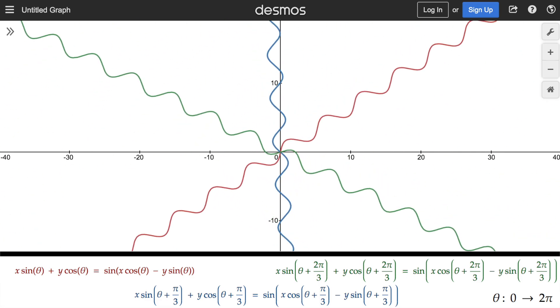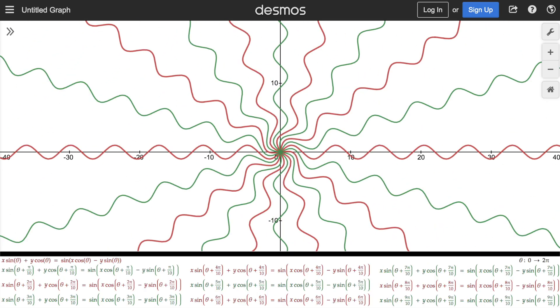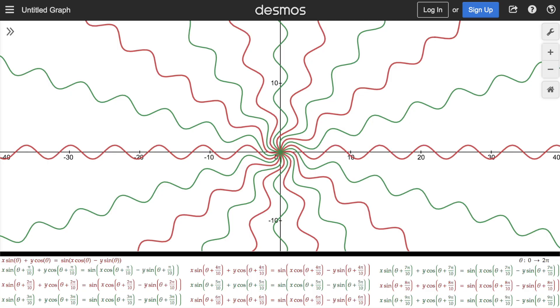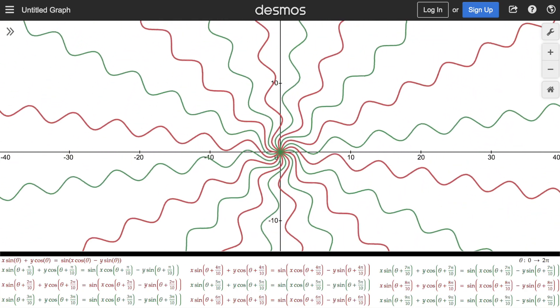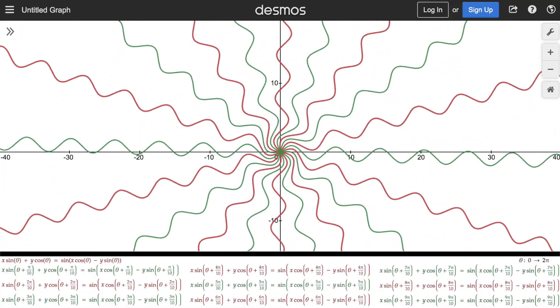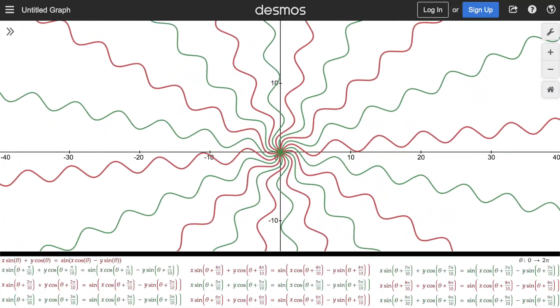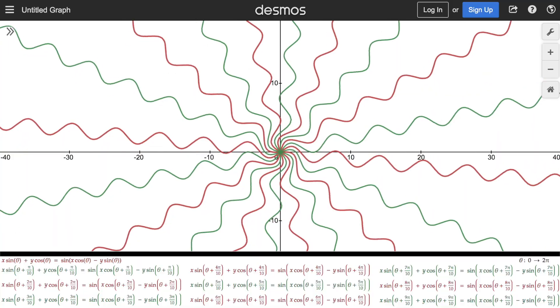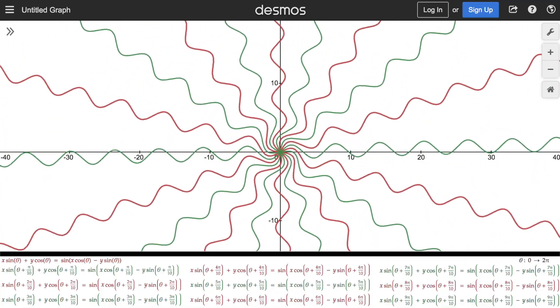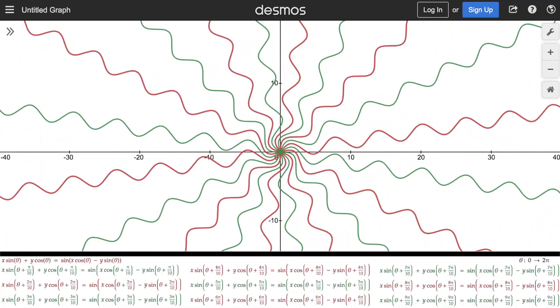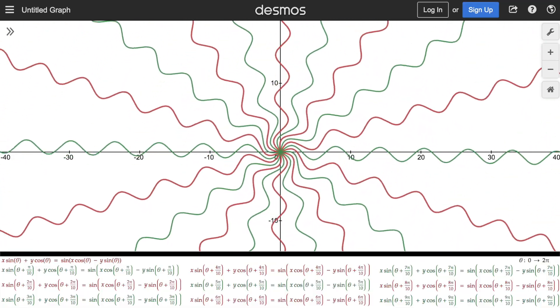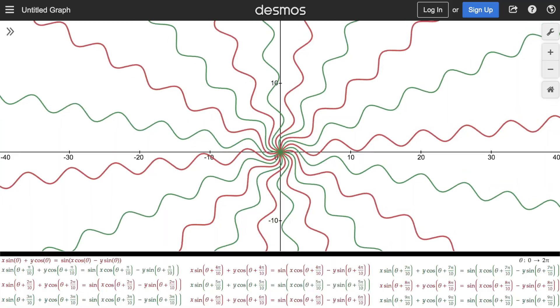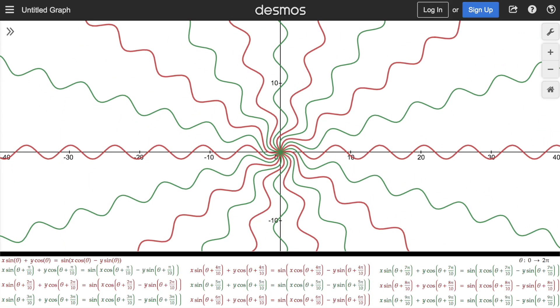But of course you can have any number of sines you want. Here you go. Ten sine waves. First one spins by theta. Second one spins by theta plus pi over ten. Third one spins by theta plus two pi over ten. Fourth one spins by theta plus three pi over ten. And so on, up to the last one which spins by theta plus nine pi over ten. Ten equations needed for this windmill. Ten equations, blimey, that's a lot.